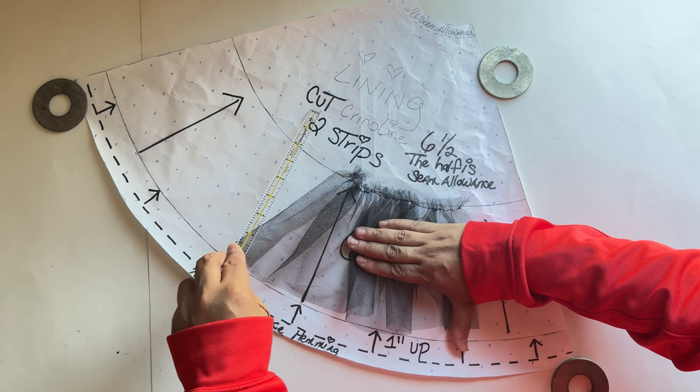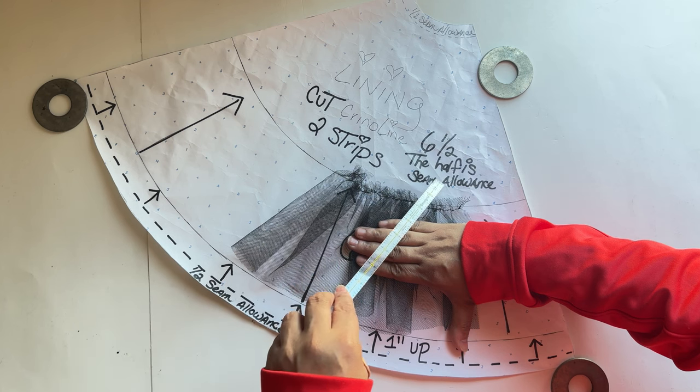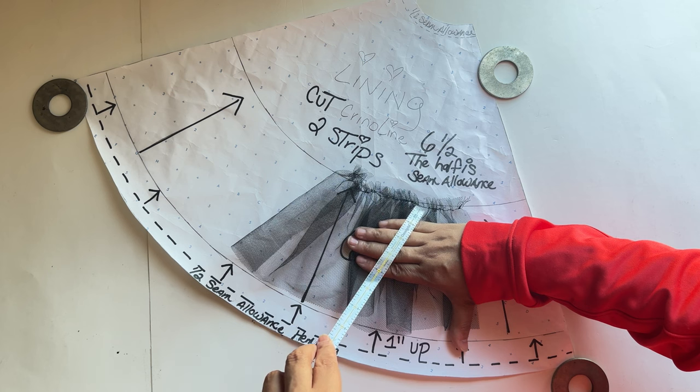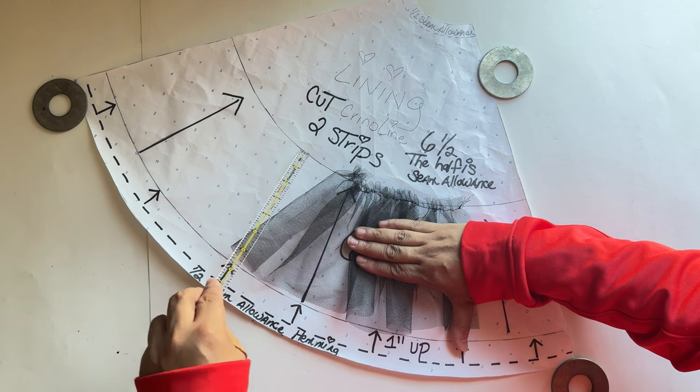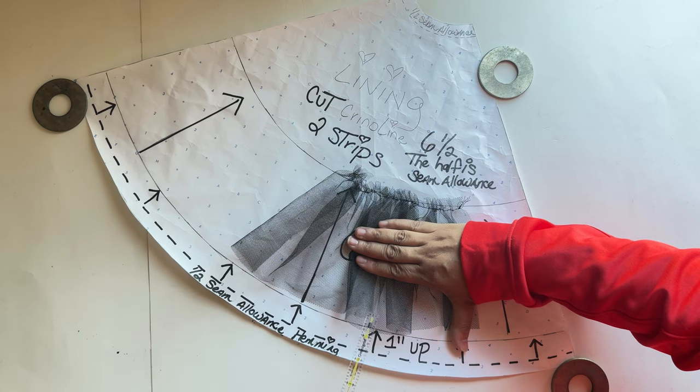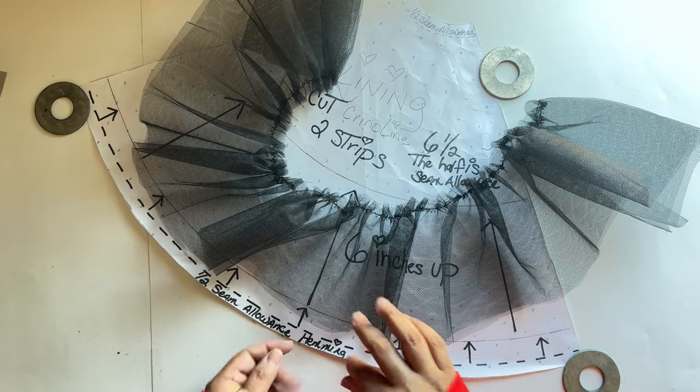The next step is the crinoline. Cut two layers—they're going to be on top of each other. Cut them six and a half inches; the half is for the seam allowance. Sew this half-inch line right on top of this line. From here to here will be six inches. Go up one inch from the half-inch hemming allowance so that the material doesn't touch your skin.